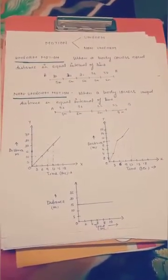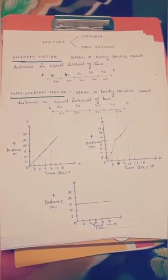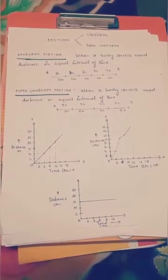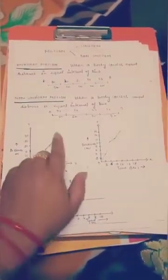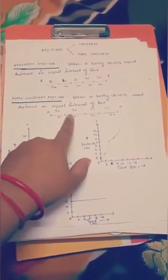Now comes the non-uniform motion. Non-uniform motion is when a body covers unequal distance in equal interval time or you can have equal distance in unequal interval of time also. See, when a body is covering unequal distance four meter in three seconds, then six meter again in three seconds, then two meter in three seconds.